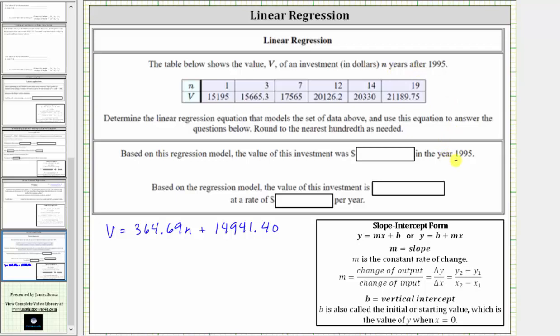Which means the balance would be the initial balance or the starting value, which is the constant term b in the equation, which is $14,941.40.